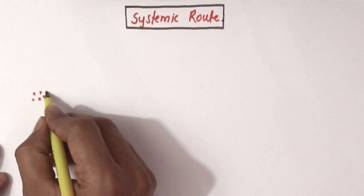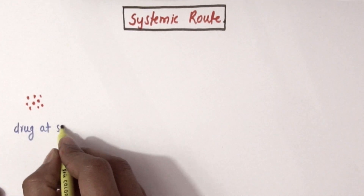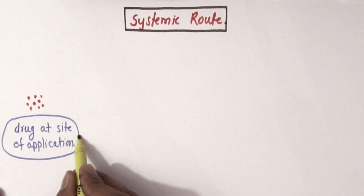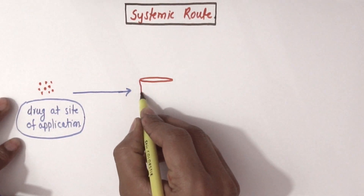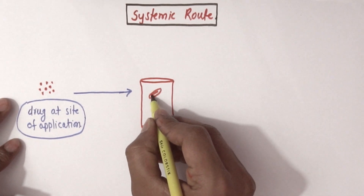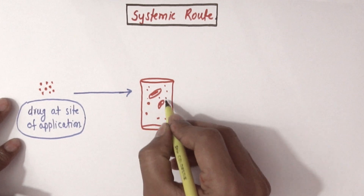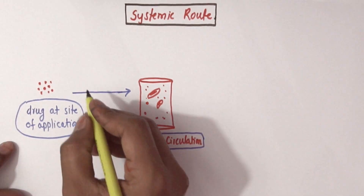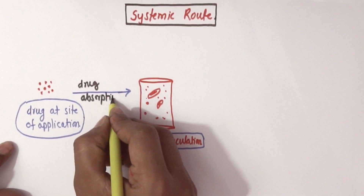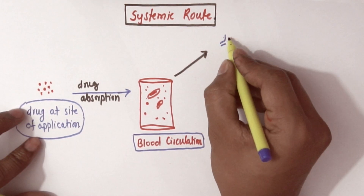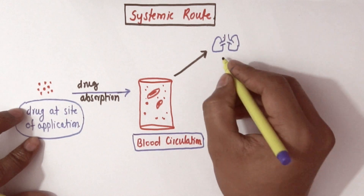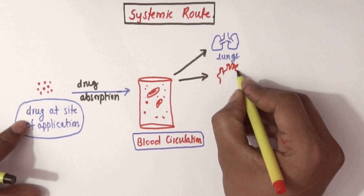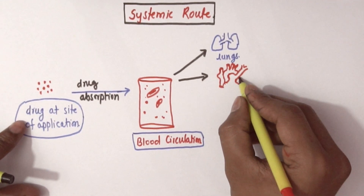Suppose this is a drug which is applied or introduced at the site of application — that is, where the drug is supposed to be applied. After that, the drug will get absorbed to blood circulation by various mechanisms, which we are going to discuss in later lectures. Once the drug reaches blood circulation from the site of application, that is called drug absorption.